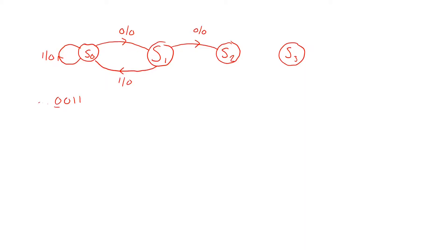Moving to state S2: if we here receive a zero it means we have now received three zeros in a row — from S0 to S2 we received two zeros, and now another zero. So we stay in state S2, because we know the two previous bits observed are zeros. If we observe a one, we are on the way toward the sequence we are looking for but haven't completed it yet, so we output a zero and move to state S3.